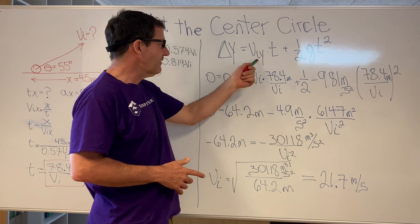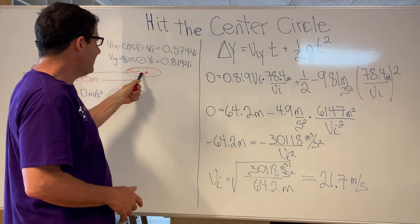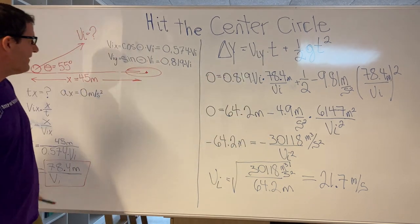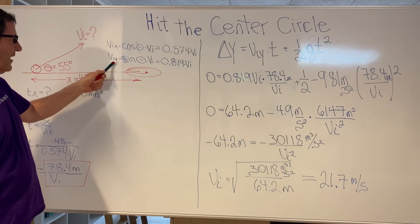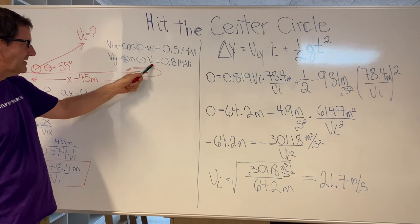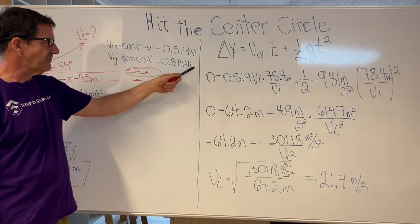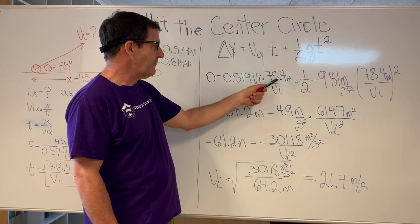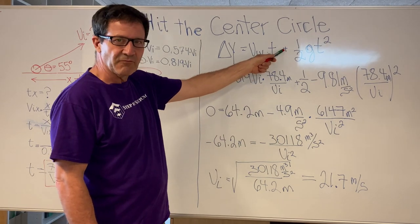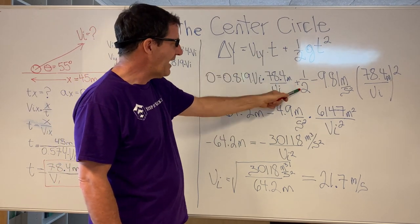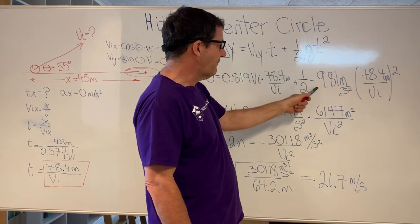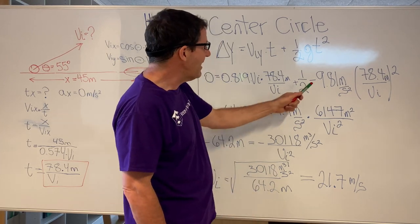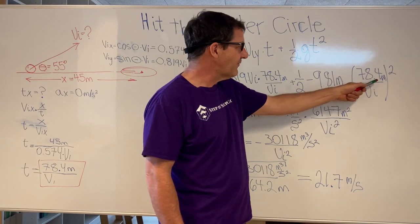We're going to plug in our other values. The change in y is zero meters, because the ball is kicked and lands on the ground — there's no change in height. The initial velocity in the y-direction is the sine of 55 degrees times the initial velocity, which gives 0.819 times the initial velocity. The time is 78.4 meters divided by the initial velocity. Don't forget the plus sign, and the acceleration in the y-direction is minus 9.81 meters per second squared.